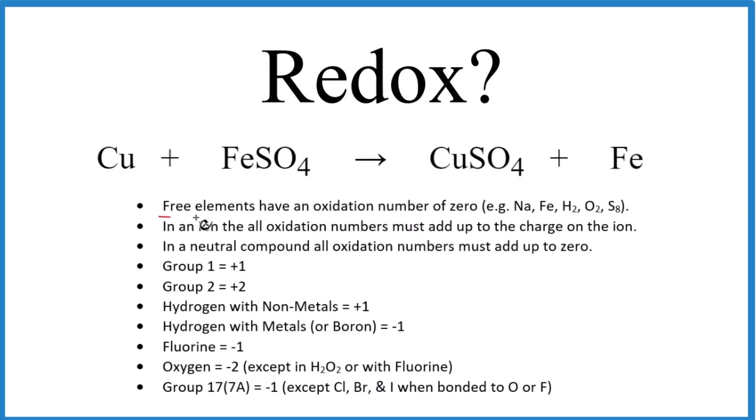So free elements, that's when we have an element all by itself, like copper, iron, O2, we saw that before, H2. Any of these are considered free elements, and they have an oxidation number of zero. So the copper and the iron, they're going to have an oxidation number of zero. So that's pretty easy.